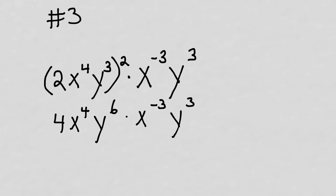We've only got one number as far as the coefficient — the four — so we bring it down. X to the fourth plus x to the negative third: we add the exponents, and that just leaves us with an x to the first, so that's an x. Y to the sixth times y to the third is going to give us y to the ninth. So the answer for that is going to be A.